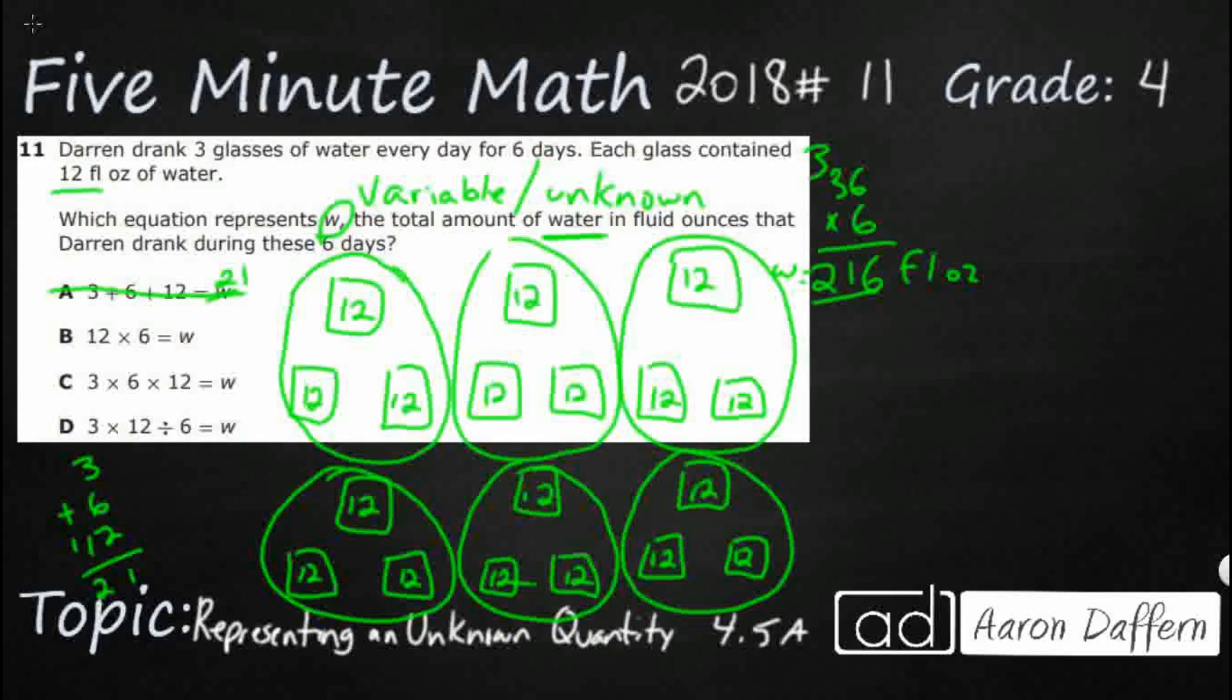So we've got 12 times 6. So I get this 12 times 6, 12 ounces, 6 days. But the problem is, there's not just 12 ounces in a day. There's 12 ounces in a glass, and there's 3 glasses each day for 6 days. So that 12 times 6 is going to get you to 72.